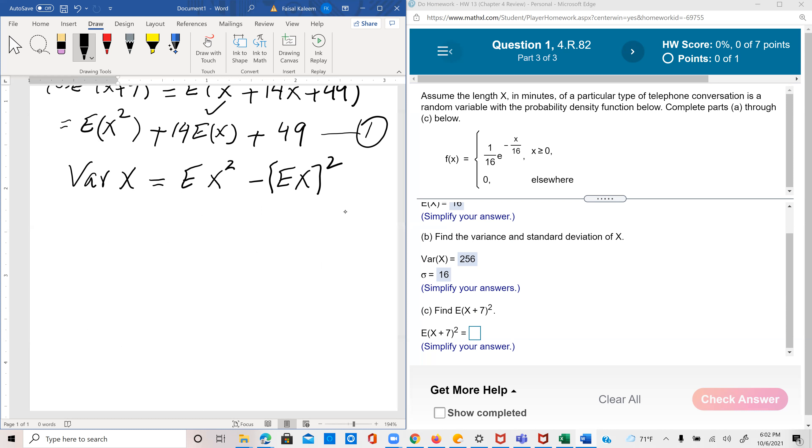So we know that the variance here was 256. 256 equals E of x square, and E of x was 16, so 16 squared. And now when you use the 16 squared on the other side, you get E of x square equals 256 plus 16 squared, which would be 512.